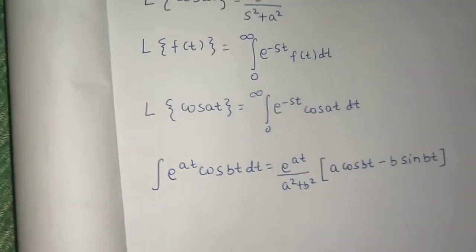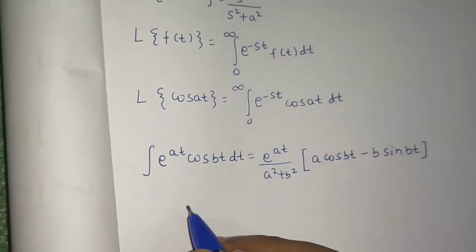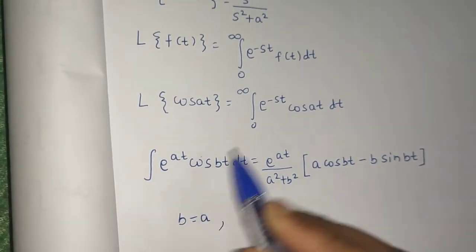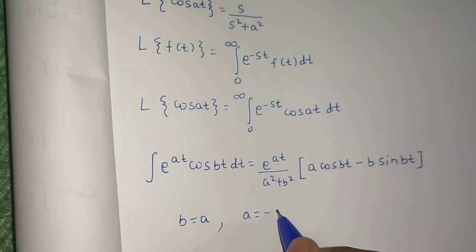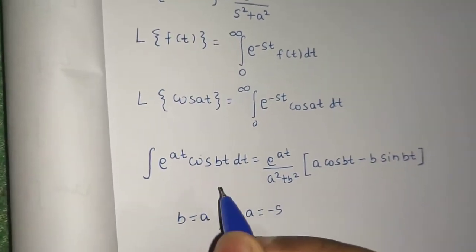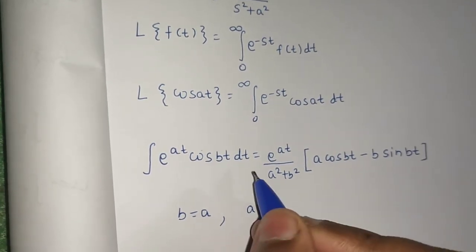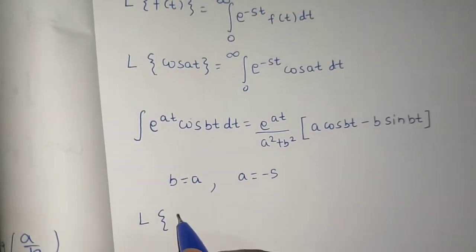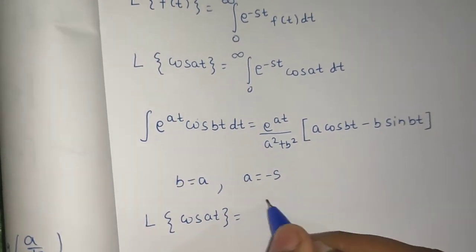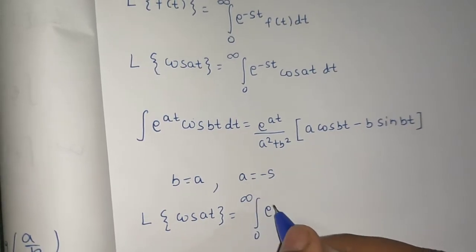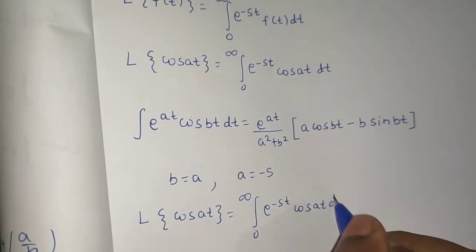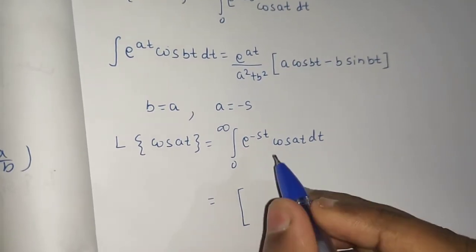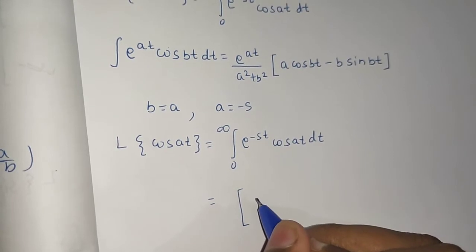We will use this formula, but in this particular question, in place of b we have a, and in place of a we have minus s. So replace a by −s and b by a. Wherever you see b in this formula replace it by a, and wherever you see a replace it by −s. So we rewrite: Laplace of cos(at) = integral from 0 to infinity of e^(−st) · cos(at) dt.